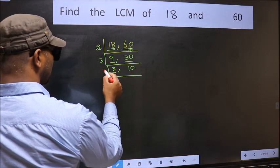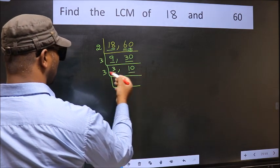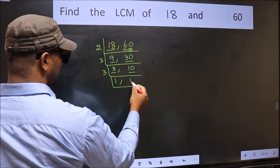Now here we have 3. 3 is a prime number, so 3 ones is 3. The other number, 10, not divisible by 3, so we write it down as it is.